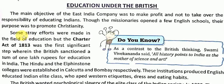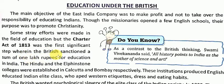Some stray efforts were made in the field of education, but the Charter Act of 1813 was the first significant step wherein the British sanctioned a sum of one lakh rupees for education in India. The Hindu College and the Elphinstone College were established in Calcutta and Bombay respectively.